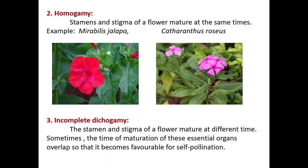In homogamy, the stamens and stigma of a flower mature at the same time, as in Mirabilis jalapa and Catharanthus roseus. The same maturation time facilitates self-pollination. In incomplete dichogamy, though stamens and stigma mature at different times, sometimes their maturation periods overlap, and at that time it becomes favorable for self-pollination.